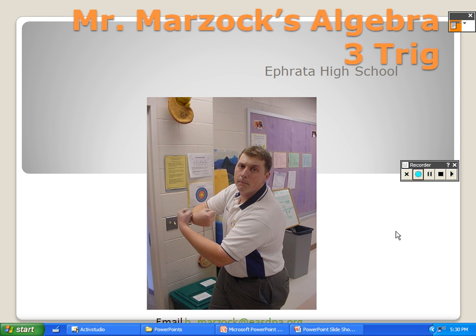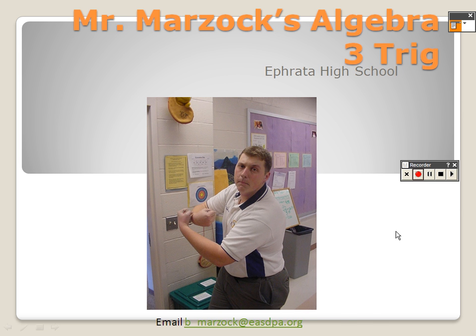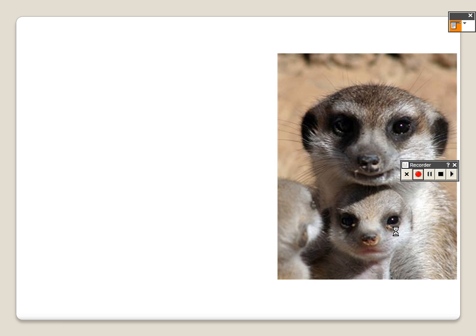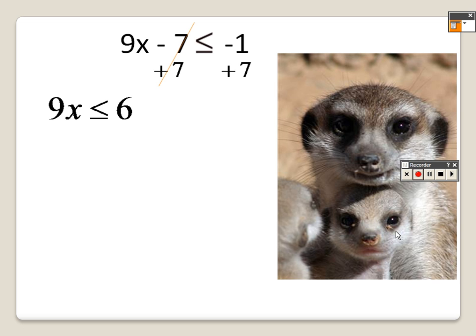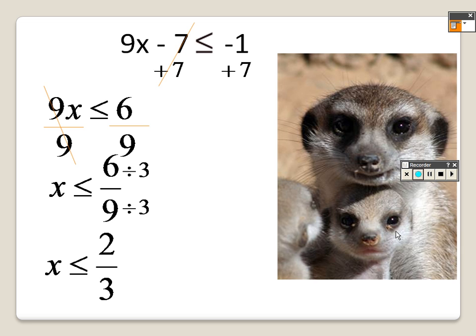So 1.6 trig examples on inequalities is what we're looking at here. We have 9x minus 7 is less than or equal to negative 1. We add 7 to both sides so we get 9x is less than or equal to 6. Divide by 9 on both sides and we get x is less than or equal to 6 ninths. I can take a 3 out of each of those so x is less than or equal to 2 thirds.